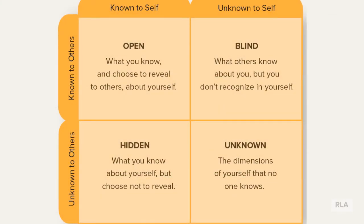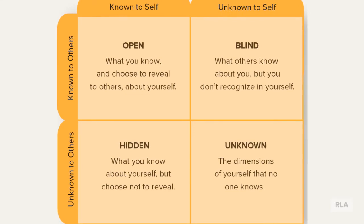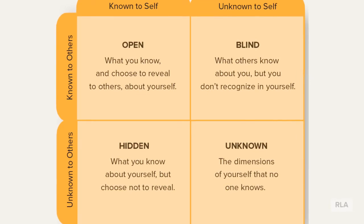This is the Johari Window. If you look at the top of the Johari Window, you will see that the left panel contains information known to self, and the right panel contains information unknown to the self. The information in the top panel is known to others about you, while the information in the bottom panel is unknown to others. These known and unknown selves intersect to create four separate areas or panels.